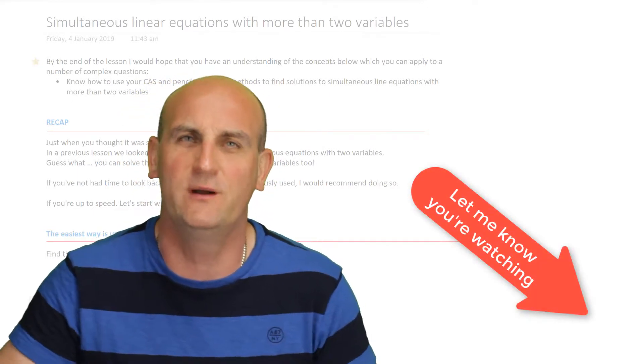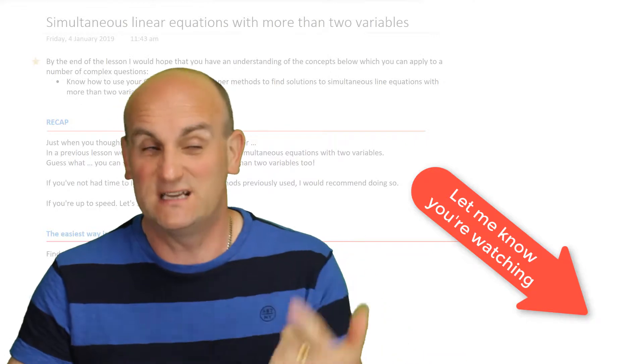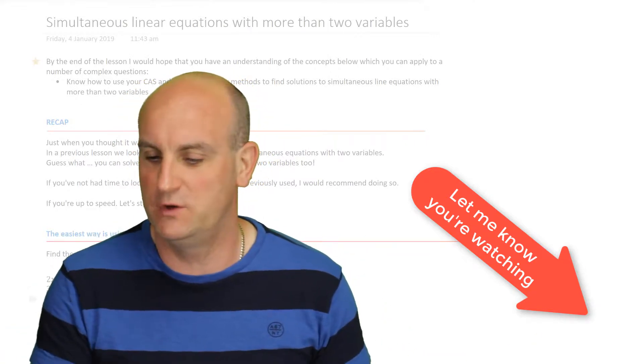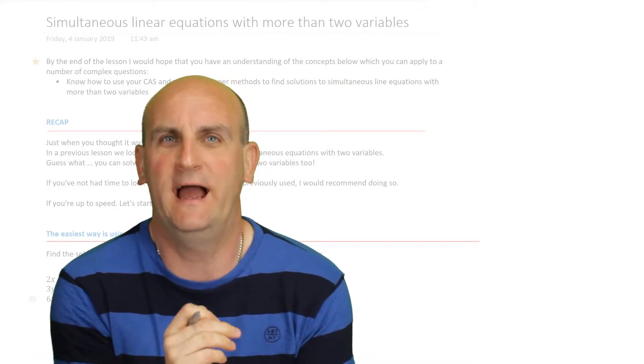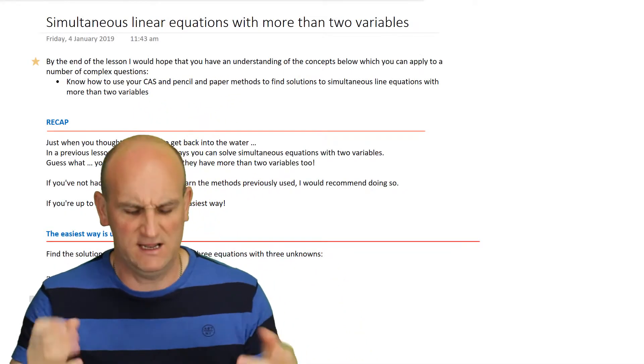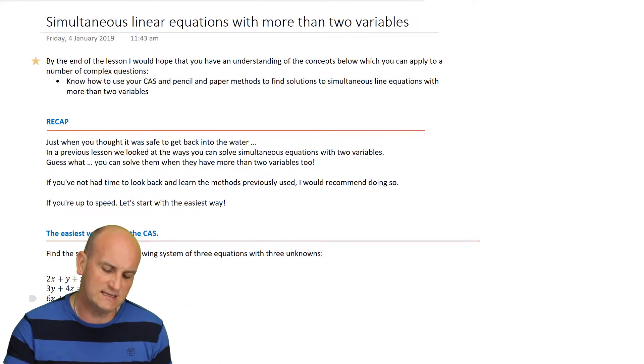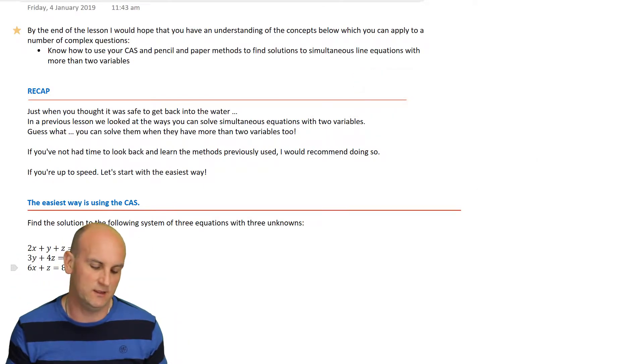If it's the first time you have been here or you have not yet managed to do so, over there in the corner is a doohickey which asks you to subscribe. Basically it just lets me know that you are watching and I'm doing this for a reason. By the end of this lesson there's a red arrow somewhere above me that says you'll have an understanding of how to use CAS and pencil and paper methods to find solutions to simultaneous equations with more than two variables.